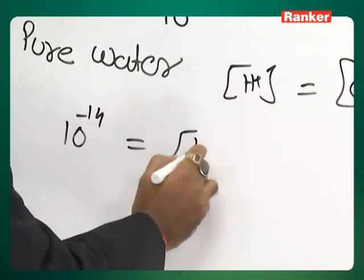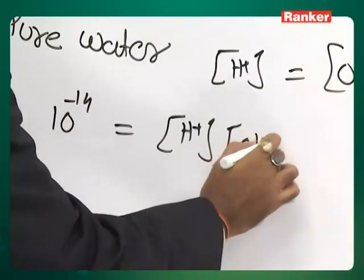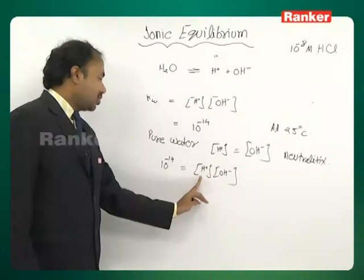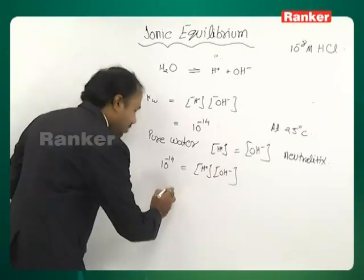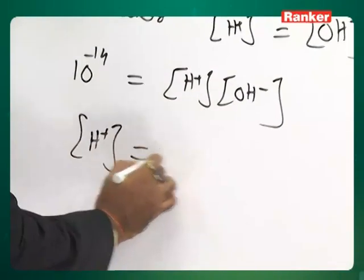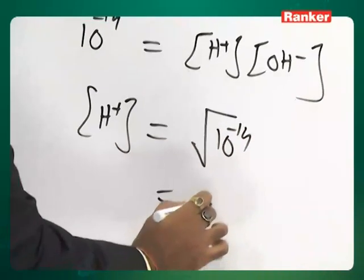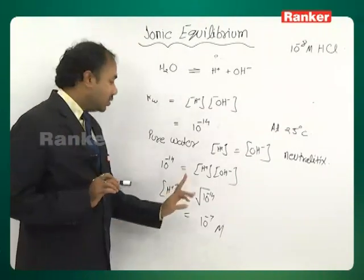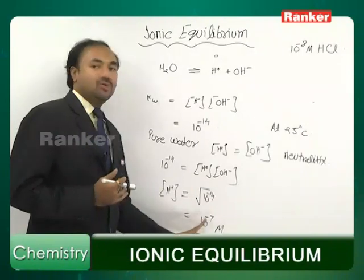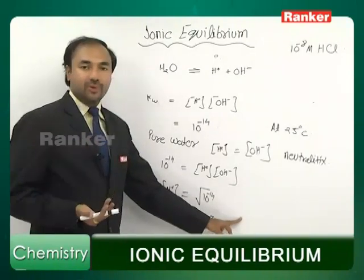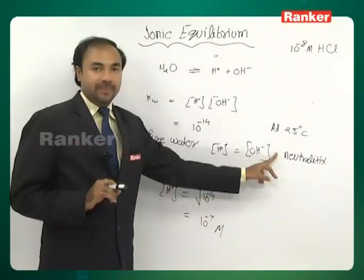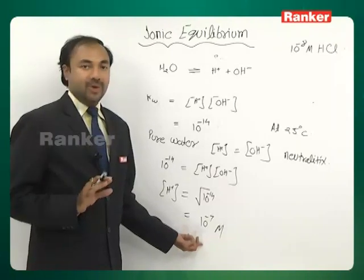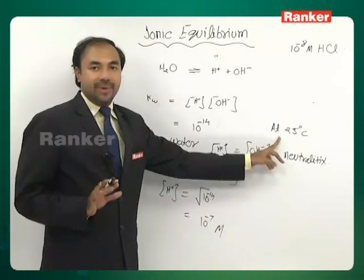[H⁺] = 10⁻⁷ moles per liter. So at 25°C, for neutral water, the concentration of H⁺ ions is 10⁻⁷ mol/L. The reverse is also true: if at 25°C a solution has [H⁺] = 10⁻⁷ mol/L, the solution is neutral. Remember, this is valid only at room temperature, around 25–28°C.